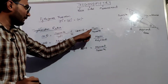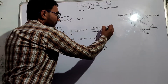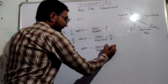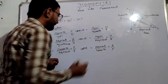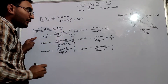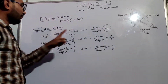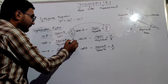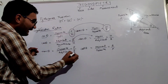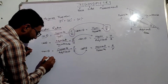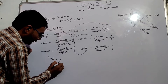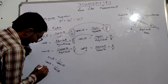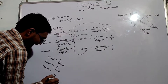Cosecant theta will be hypotenuse upon opposite side, which means hypotenuse upon perpendicular. You can see that sin theta is perpendicular upon hypotenuse and cosecant theta is hypotenuse upon perpendicular, which is the reciprocal of sin theta. Similarly, cos theta and secant theta are reciprocals, and tan theta and cot theta are reciprocals. So sin theta equals one upon cosecant theta, cos theta equals one upon secant theta, and tan theta equals one upon cot theta.